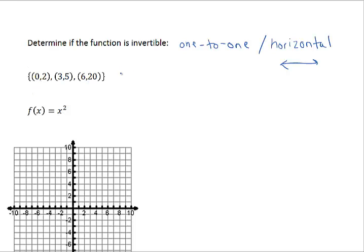So let's take a look at this first example. We're given three ordered pairs. This is indeed invertible. It's invertible because for every x value I have a unique output.